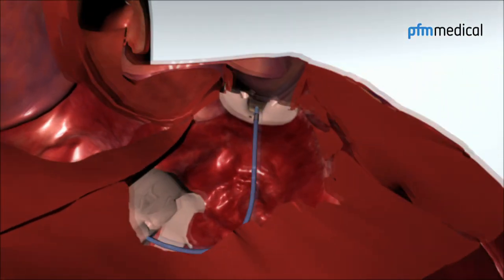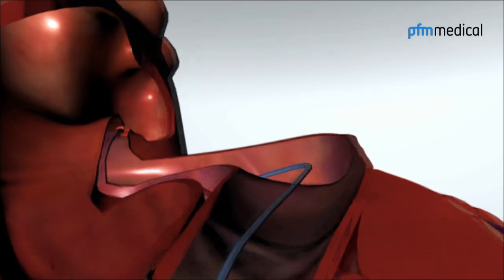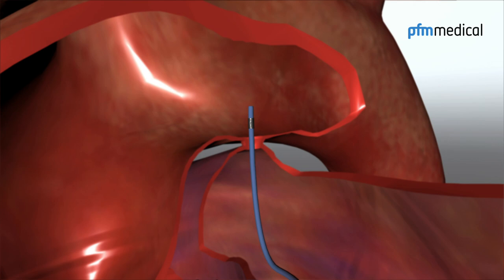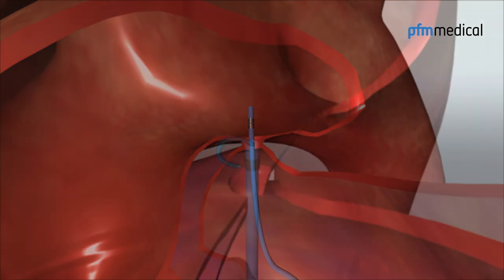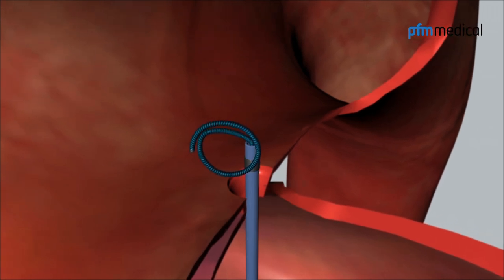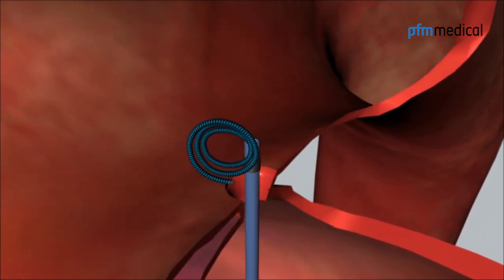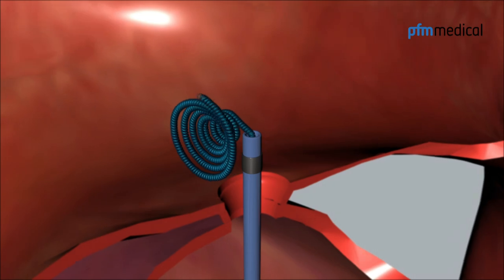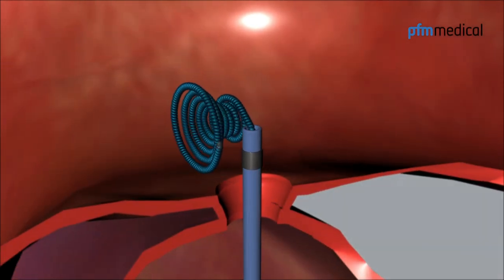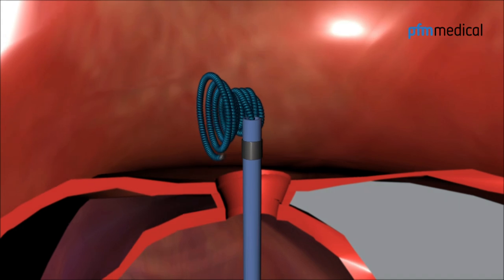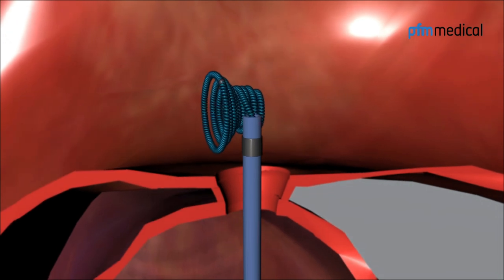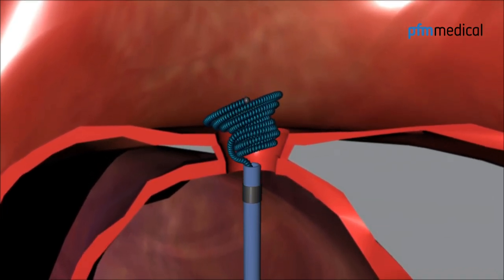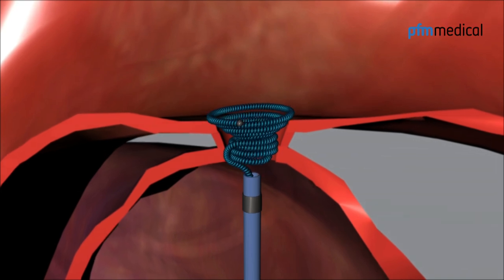The implantation catheter is advanced from the pulmonary artery, through the defect and placed in the descending aorta. The coil is advanced to the distal end of the implantation sheath. All but one loop is configured outside the implantation catheter. The entire system is retracted until the configured coil is positioned in the ampulla of the ductus.